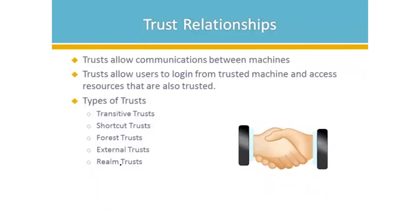Let's define trust relationships — we'll introduce the concept here and revisit it shortly. A trust relationship allows communications between machines. This is important because if a machine is not trusted by the domain, it won't be able to log on. Depending on how you configure Outlook, it might mean that someone can't retrieve their mail or log on to get to their mail. We have login information from a trusted machine and we access resources that are going to be trusted — those resources could be network-wide or exchange-based.